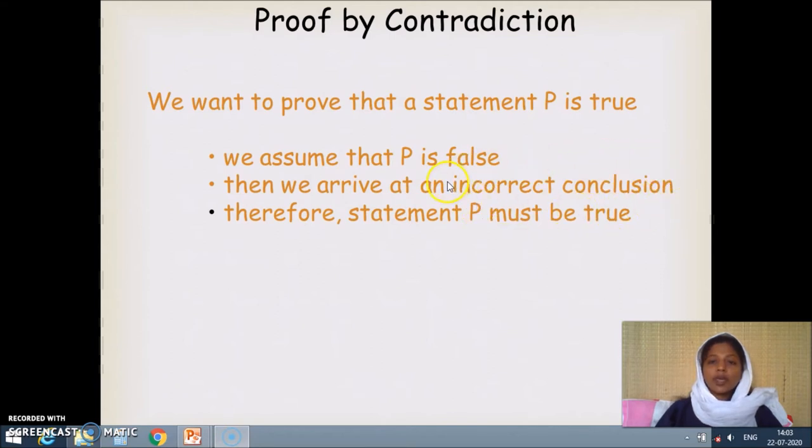Because we have assumed that P is false which is incorrect, this is a contradiction that we will meet and therefore we will claim that P is true.